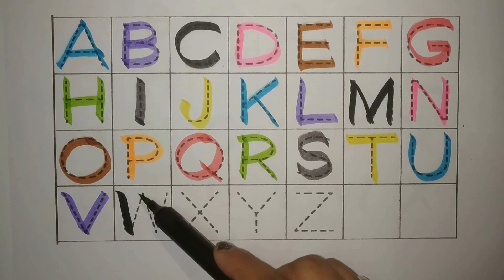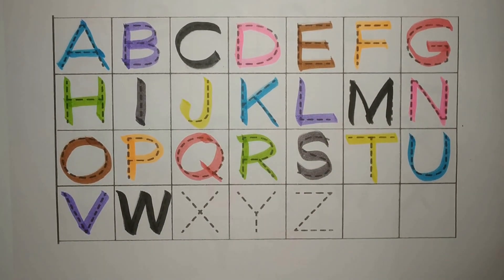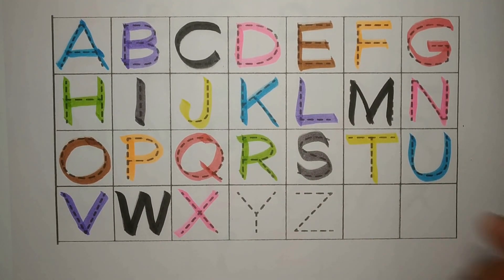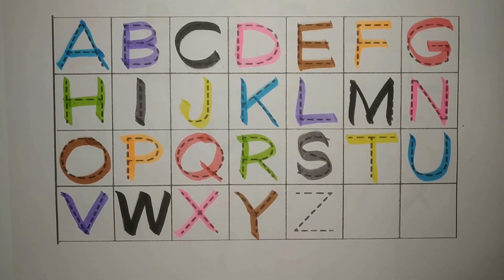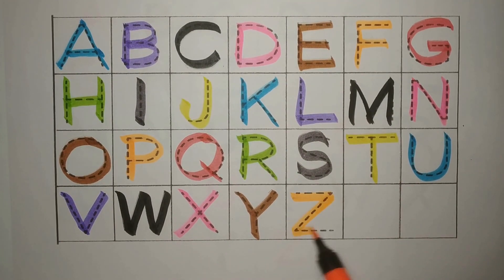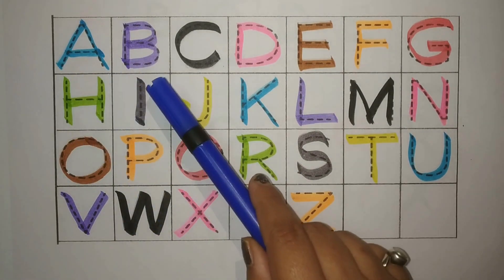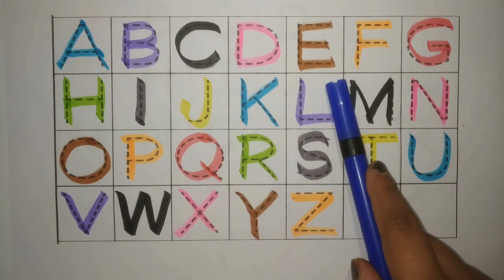Black W for Watermelon, Tarbhoos. Pink X for Xylophone. Brown Y for Yacht. Orange Z for Zero, Shunia. Let's revise! A Blue, B Purple, C Black, D Pink, E Brown.